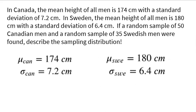One thing I like to do before I get started is get all my numbers organized, because there is a lot of numbers in this problem. I'm going to use CAN as my subscript for Canadian and SWE for Swedish men. So the mean for the Canadian was 174, standard deviation 7.2, and the sample size was 50. For the Swedish men, the mean was 180, standard deviation 6.4, and the sample size was 35.